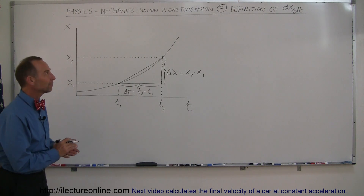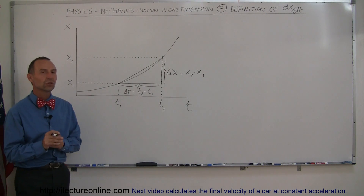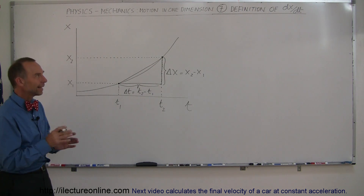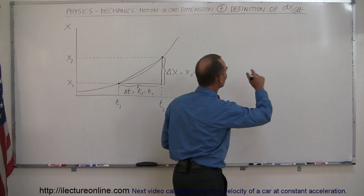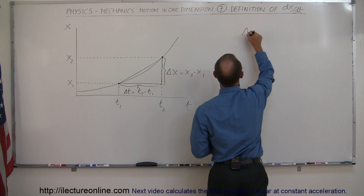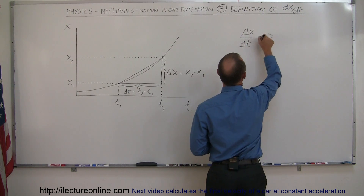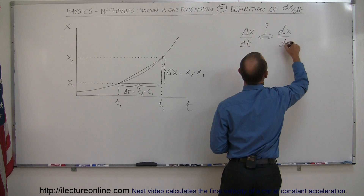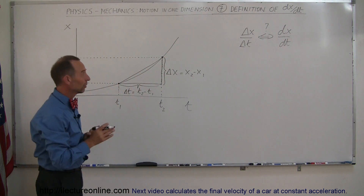Welcome to Electron Line, and here in our series on motion in one dimension, we want to talk about the difference between delta x, delta t, and dx/dt. Here I have the definition of dx/dt. We want to compare that to delta x over delta t, and that's how we can understand what dx/dt really means.